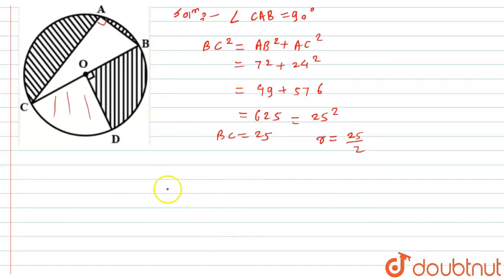So, area of shaded region equals area of the circle, that is π R squared, minus area of the triangle, that is 1/2 AB into CA, minus area of the quarter half circle, that is 1/4 π R squared. I will simply put the values over here.